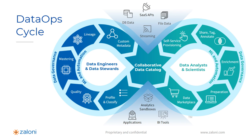On the engineering side, you're doing things like data quality, profiling, classifying data, tracking lineage and history, building out the metadata — technical metadata and operational metadata — so that consumers on the other side of the loop know what they're shopping for. We call it an Amazon-like experience. When you're shopping for a product, you want to know all the characteristics: all the fields, how recent it is, how clean it is.